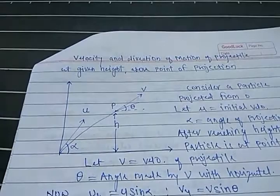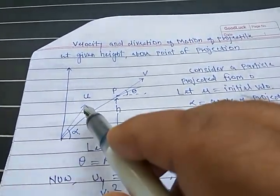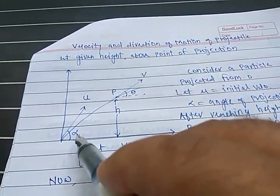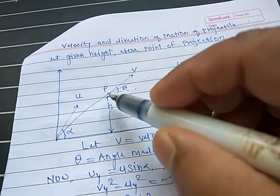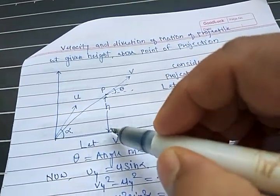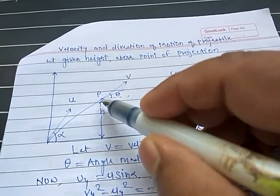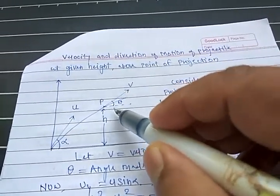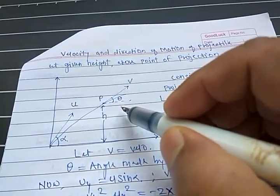See the figure. A particle is projected from point O with initial velocity U, making an angle alpha. During travel, the particle reaches point P. This P is at a height of H meters from the horizontal, and at P its velocity is V, making an angle theta with the horizontal.